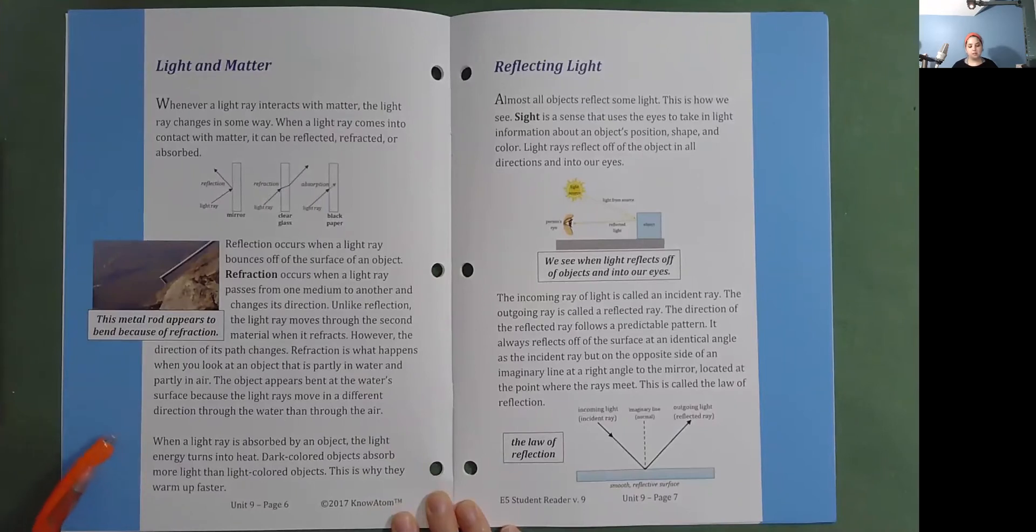When a light ray is absorbed by an object, the light energy turns into heat. Dark colored objects absorb more light than light colored objects. This is why they warm up faster. This metal rod appears to bend because of refraction.